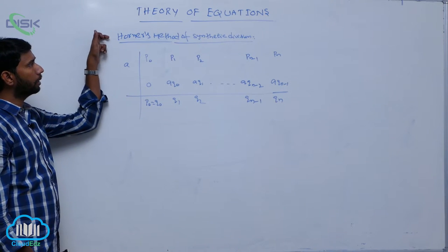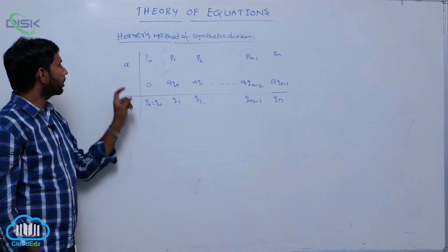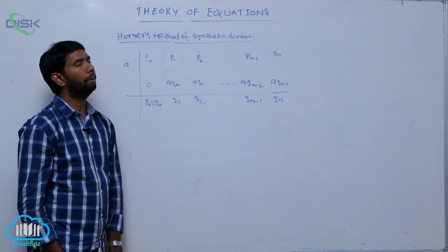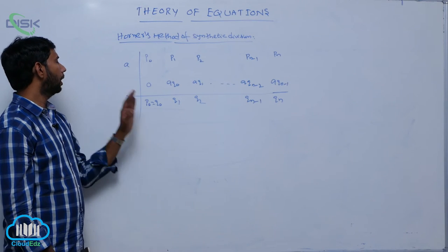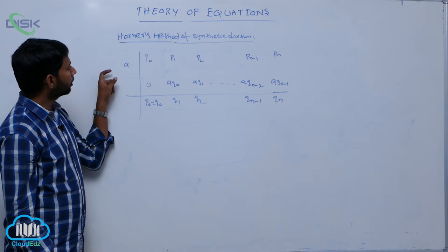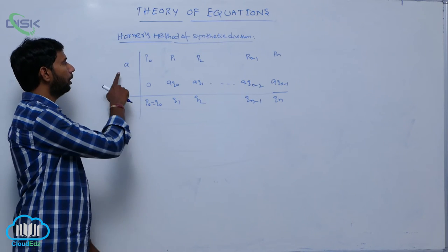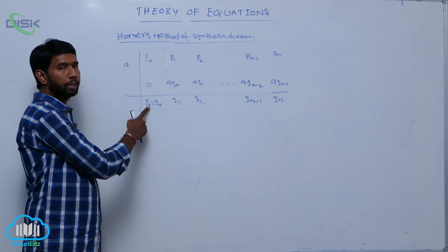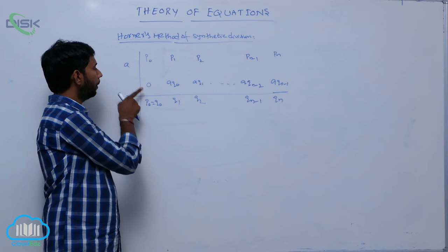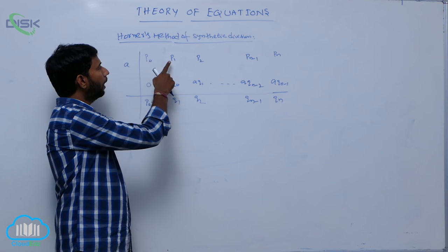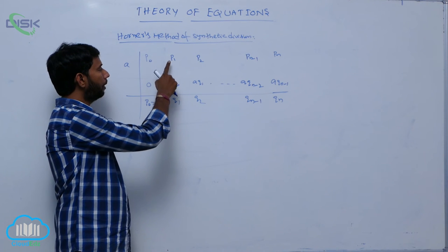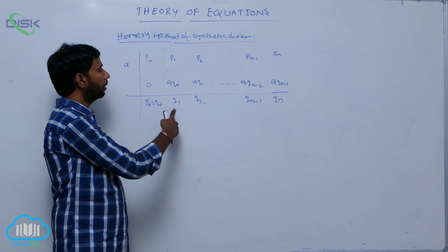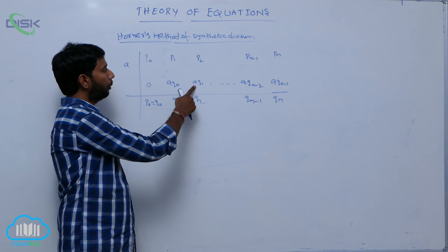To apply Horner's method of synthetic division: first, write the coefficients of the polynomial p₀, p₁, p₂, and so on, pₙ₋₁ and pₙ on the left side. Place the value a on the left. p₀ plus zero equals p₀, which is considered as q₀. Multiply q₀ by a and add to p₁: p₁ plus a·q₀ is considered as q₁. Then p₂ plus a·q₁ is considered as q₂, and so on.